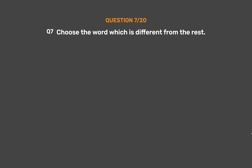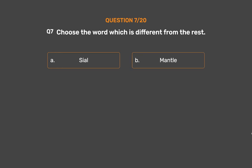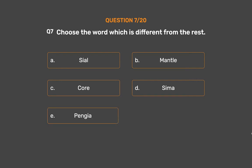Question number 7. Choose the word which is different from the rest. Option A: Sial. Option B: Mantle. Option C: Core. Option D: Seema. Option E: Pengia.